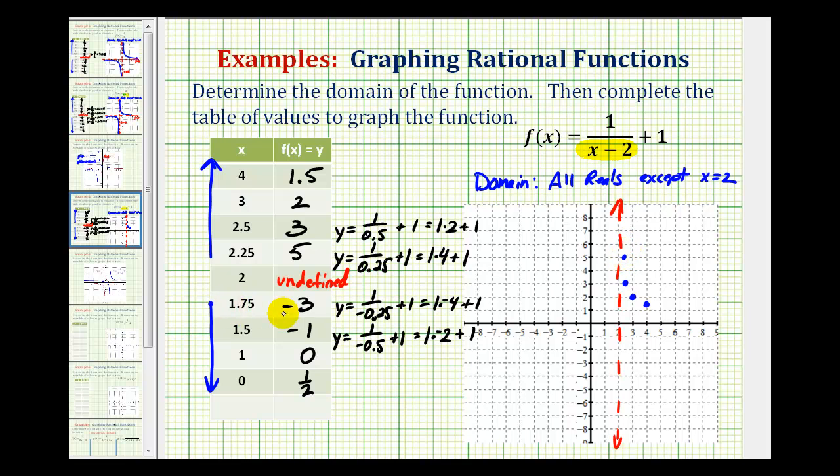And then we have one point seven five, negative three, that would be somewhere in here. One point five, negative one, is here. One, zero, is here, and zero, one-half, is here.